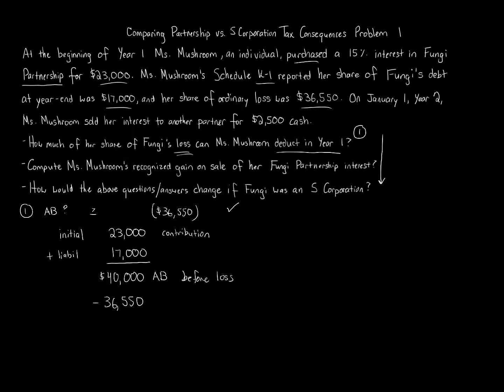So that means we can subtract away the full $36,550 loss. So how much of our share of the loss can Ms. Mushroom deduct? It's the full amount. The full amount can be deducted. So $40,000 minus $36,550, that's going to bring the basis down to $3,450 is the adjusted basis at the end of the year. So we've just answered that question. The answer is yes, the full $36,550 of loss can be deducted. The full loss can be deducted, yes.